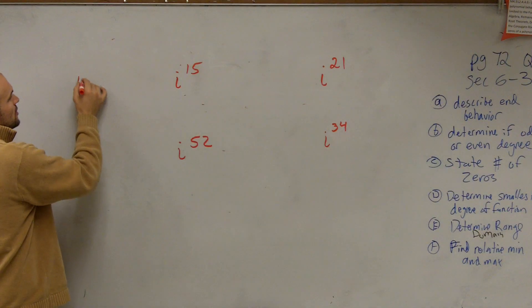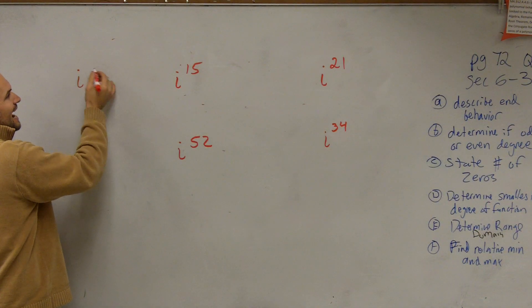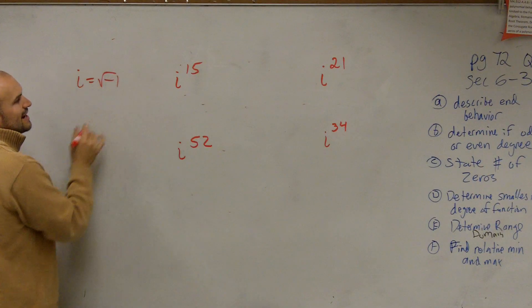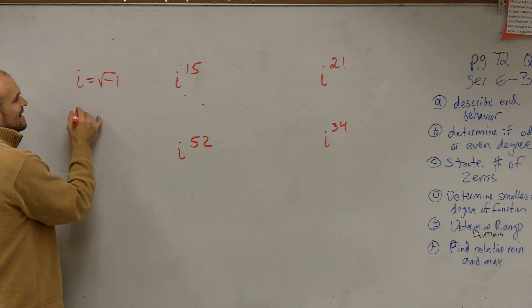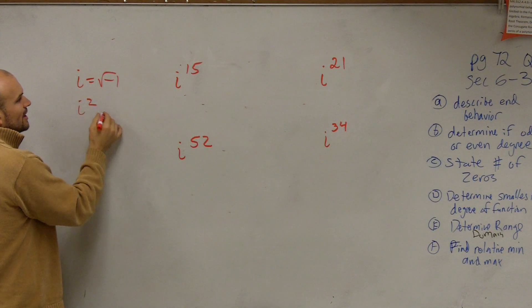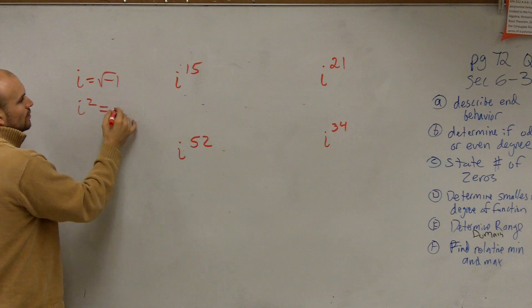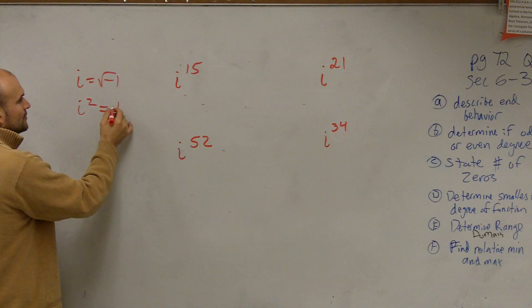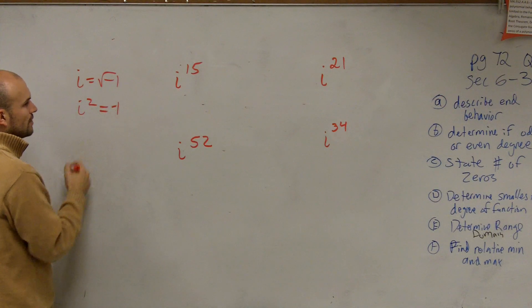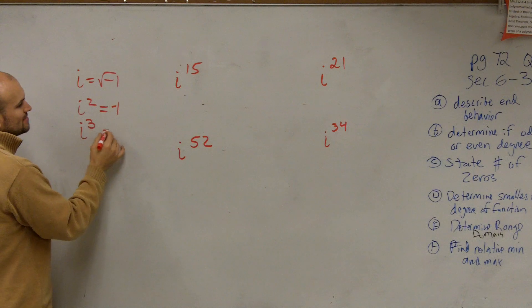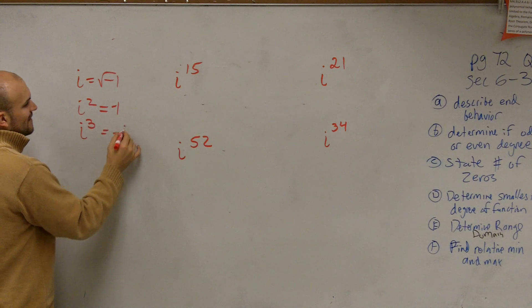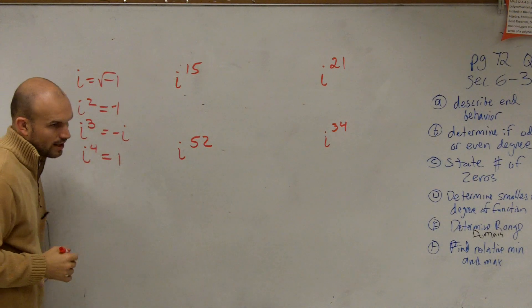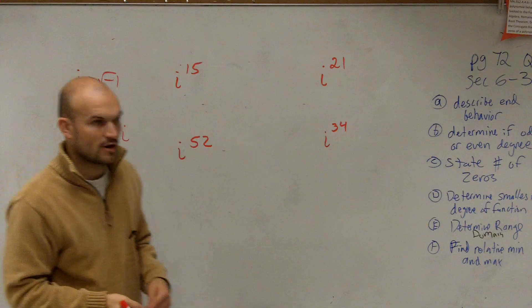So what we've learned so far, you guys wrote down: we said i equals the square root of negative one. Then we said i squared equals negative one. Then we said i cubed equals negative i, and i to the fourth power equals one, right?